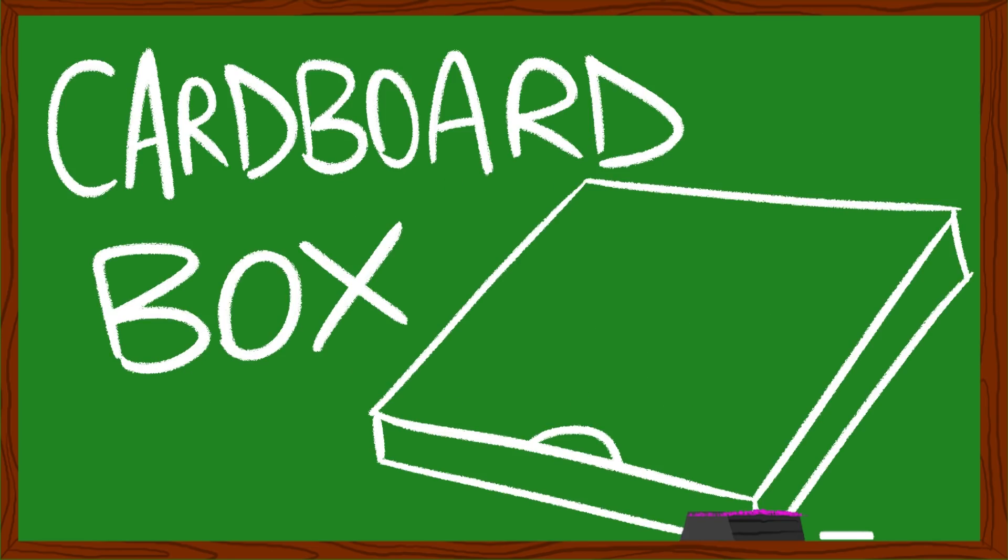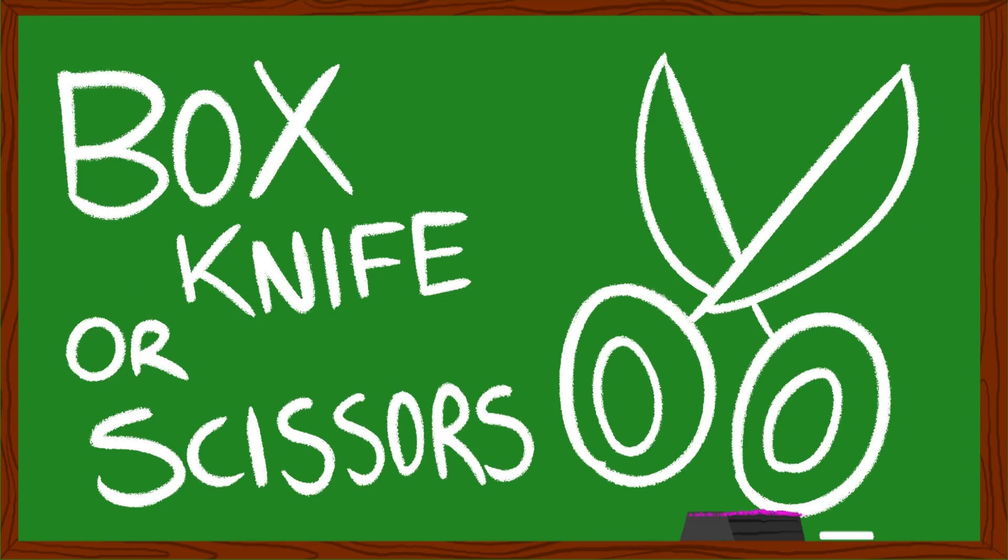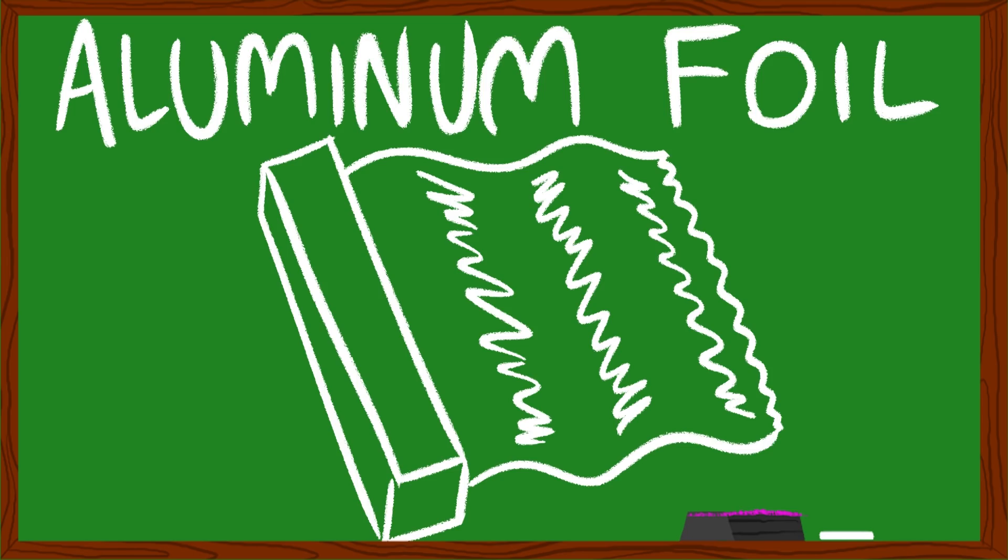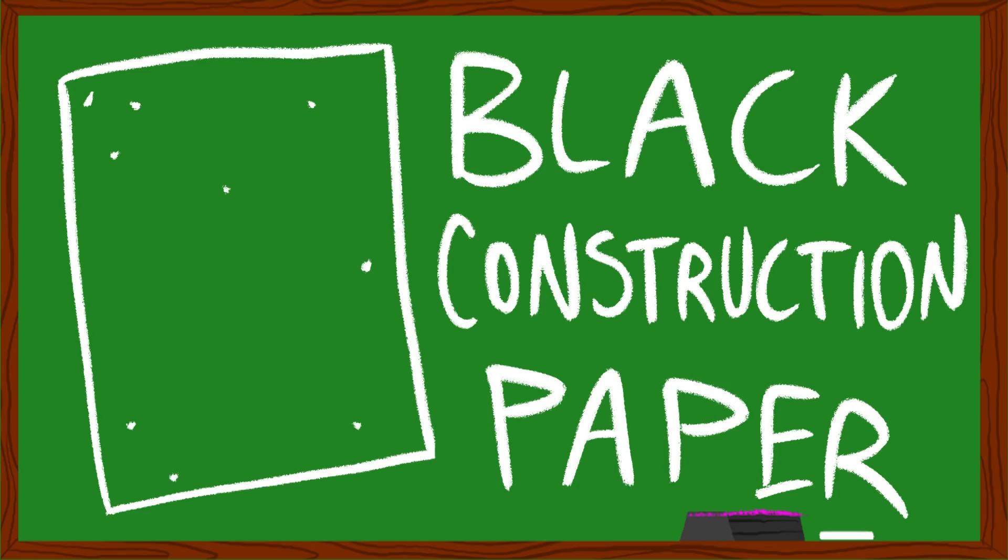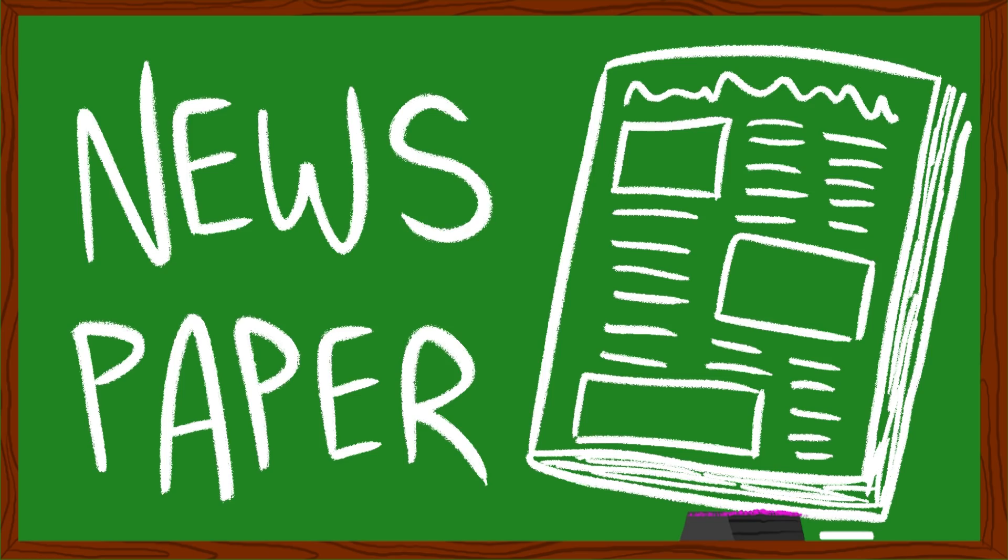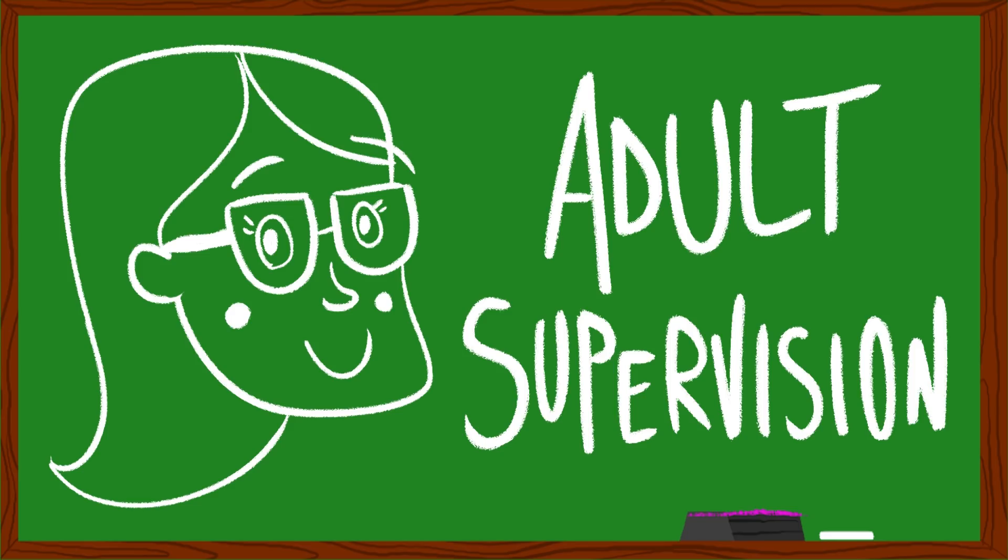We'll be cooking up some ooey gooey cheesy nachos once we get our oven up and running! Here's what you'll need. One cardboard pizza box, one box knife or scissors, aluminum foil, clear tape, plastic wrap, black construction paper, newspapers, one ruler, and adult supervision.